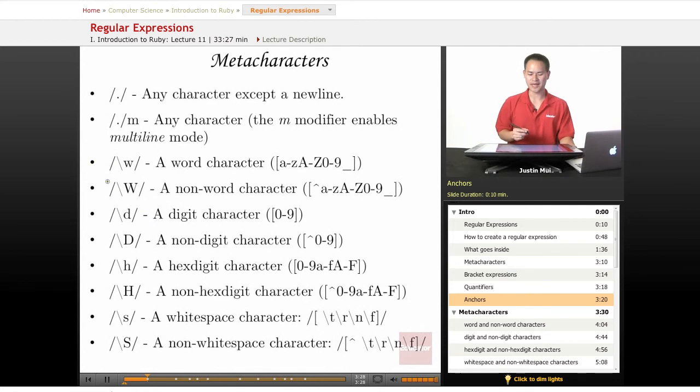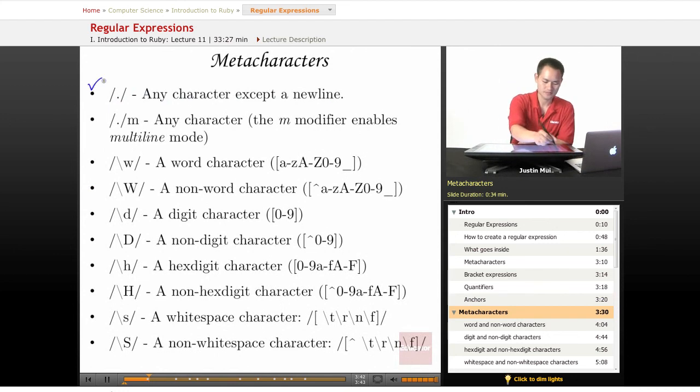So first, we're going to look at metacharacters. For this one, we're going to look at the dot. This will match any character except a newline. The next one, we're looking at this multiline mode, just adds this M at the end. So it can match newlines.